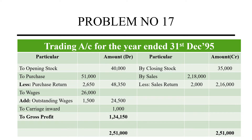Now let's look at the trading account. On the credit side, we have closing stock and sales of Rs. 2,18,000. After deducting sales returns, the actual sales figure is Rs. 2,16,000. So the total credit side comes to Rs. 2,51,000.